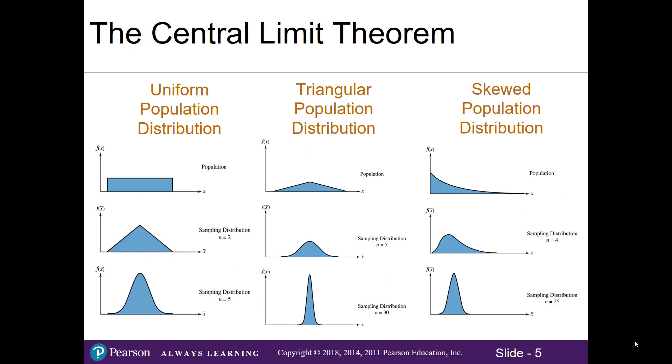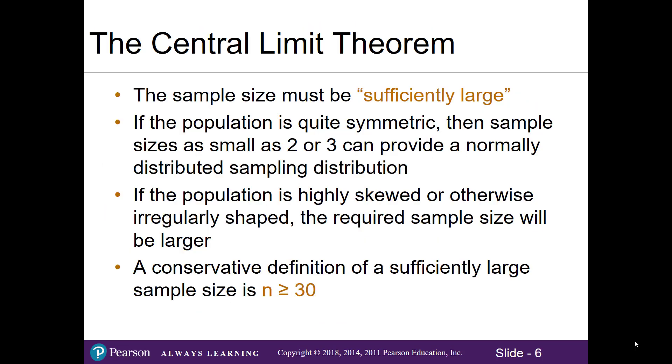Regarding the central limit theorem, this saves us a lot of time when we're trying to find the probability of an event. Regardless of what our population distribution shape is—it could be uniform, triangular, or skewed—when we have a large enough sample size, our sampling distribution will be bell-shaped.